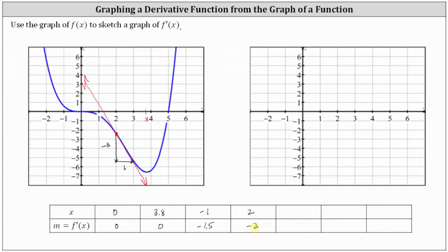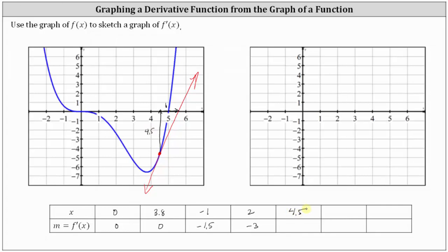Let's go ahead and find one more tangent line at x equals 4.5, which should be approximately here. Let's sketch the tangent line. Notice we go up approximately 4.5 units and then right one unit to find another point on the tangent line. Therefore the slope is equal to 4.5 divided by 1, or 4.5. So when x equals 4.5, the derivative function value and the slope of the tangent line is approximately 4.5.